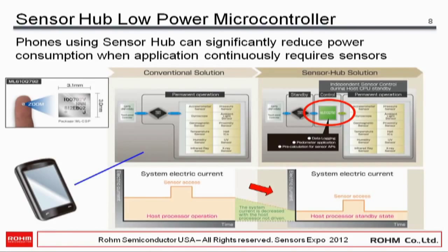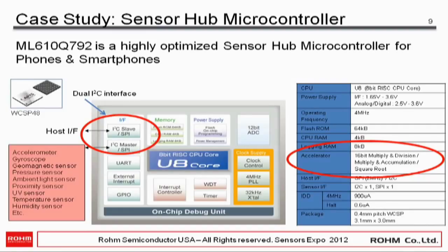The SensorHub low power microcontroller diagram shows that power consumption would be high if the apps processor is running continuously. Phones using a SensorHub can significantly reduce power consumption when an application continuously requires sensors — which is exactly what you need for activity detection. Using a SensorHub means you power only the SensorHub; the average power comes down significantly.